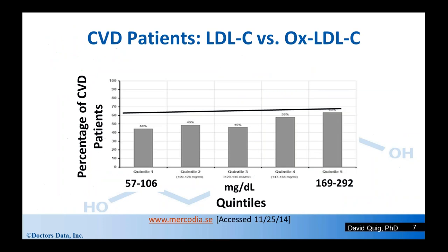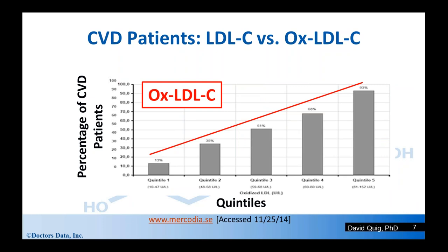Unfortunately, when macrophages get full of oxidized LDL, they start to balloon up and become foam cells. Looking at the percentage of cardiovascular disease patients across different quintiles, there is very little relationship — basically a flat line — between low and high levels of LDL with respect to cardiovascular disease. In sharp contrast, if we plot oxidized LDL, we see a very significant slope and linear relationship between the level of oxidized LDL and the risk or occurrence of cardiovascular disease.